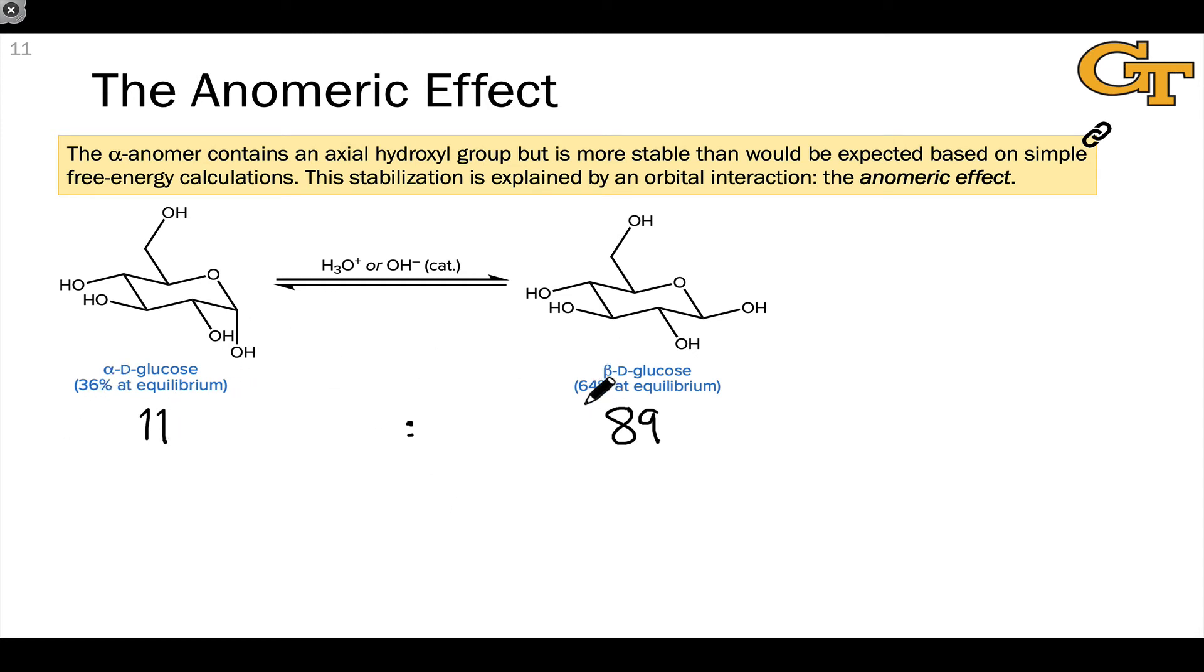The actual ratio we observe is 64 to 36. So why is there more of the axial anomer around than we would expect based on cyclohexane A values or simple calculations? This means the axial anomer, or alpha anomer, is somehow more stable than it would be in the absence of some additional effect.